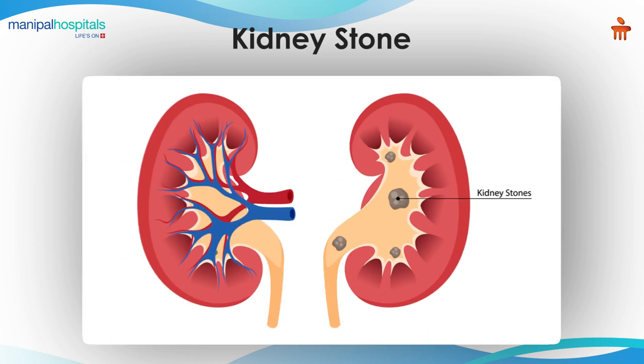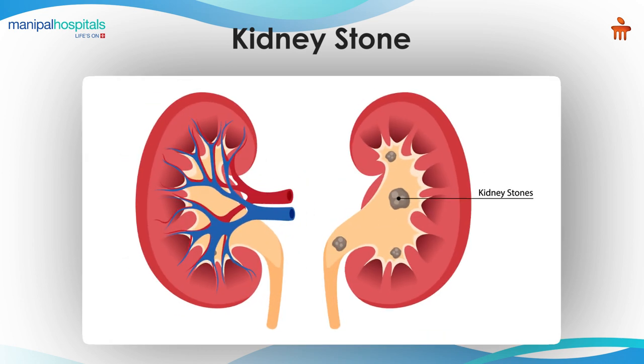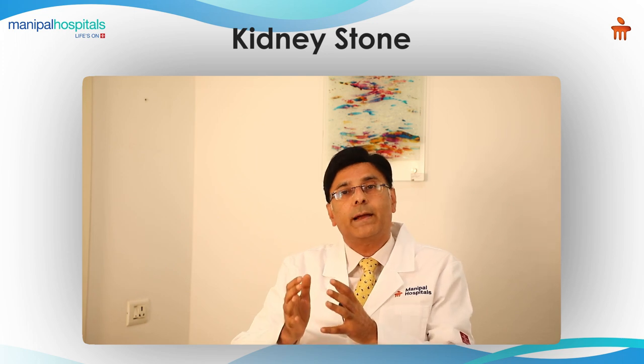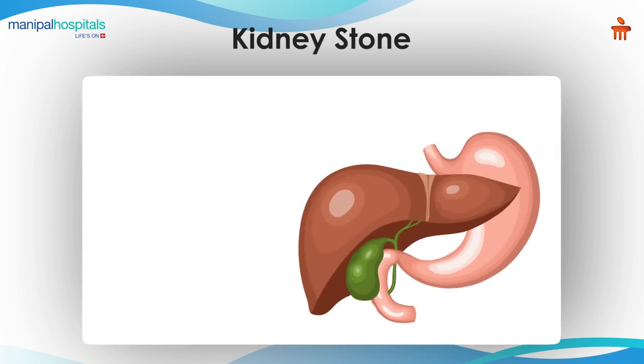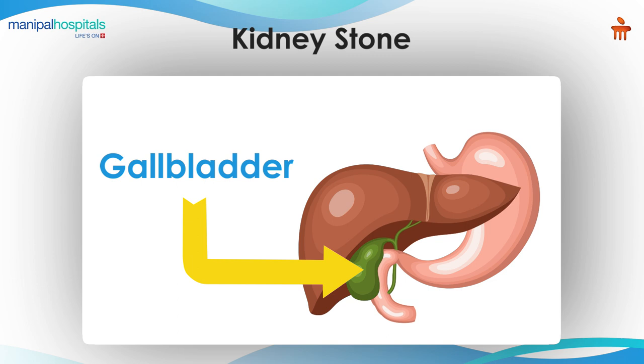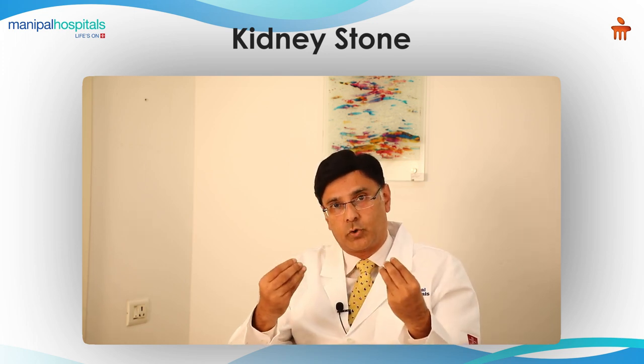The kidney stone is a stone present within the renal system — the genitourinary system. They are different from gallbladder stones, and there is often confusion between these two. The gallbladder secretes bile and is located between the liver and the stomach, so that stone is different. The kidney stone forms within the urinary-secreting organs located in the flank.